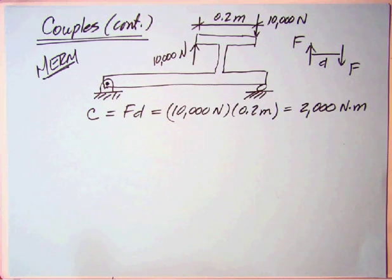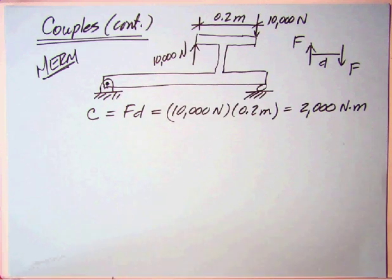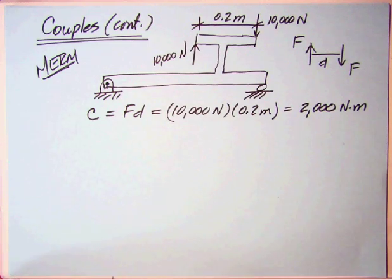So we can go in and calculate, and he does there, calculate the moment of that couple, F times D, 10,000 newtons times 0.2 meters, or 2,000 newton-meters. Okay, well, now, what would the free-body diagram look like?